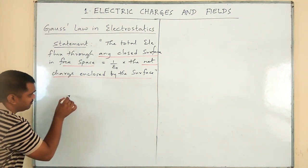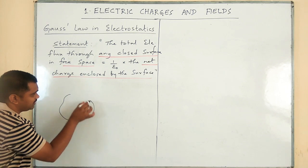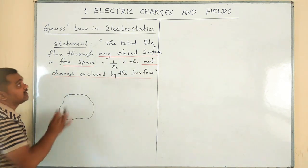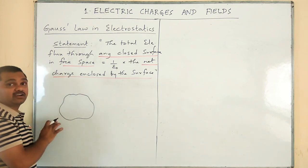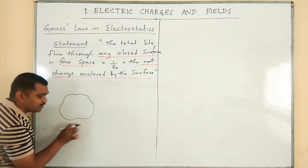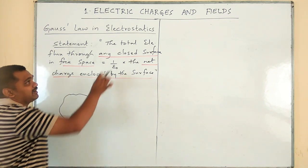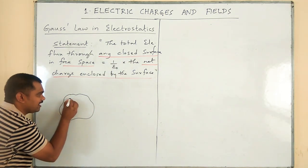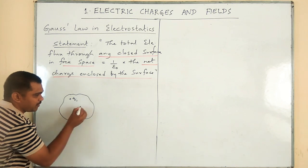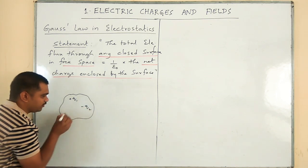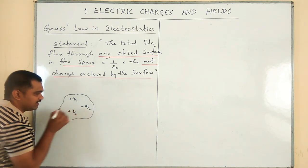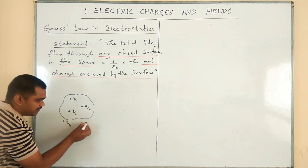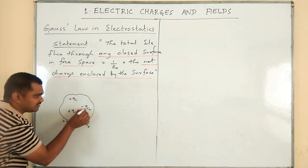As per the statement, if we consider a closed surface, any closed surface means this Gauss law is independent of the shape and size of the closed surface we have selected. Here I will place a few charges: plus Q1, minus Q2, plus Q3 inside the surface, and plus Q4 and minus Q5 outside the surface.